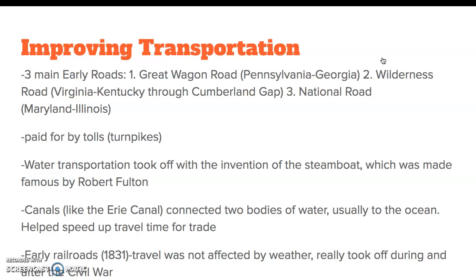With a growing population in our country since independence and since the Constitution was put into effect, we have people needing to move not only into our nation but around through it. So we've got three main early roads: the Great Wagon Road, which connected Pennsylvania to Georgia; the Wilderness Road, which led from Virginia to the frontier of Kentucky through the Cumberland Gap; and the National Road, which led from Maryland to Illinois in the Midwest.